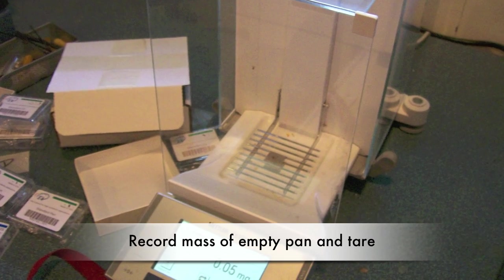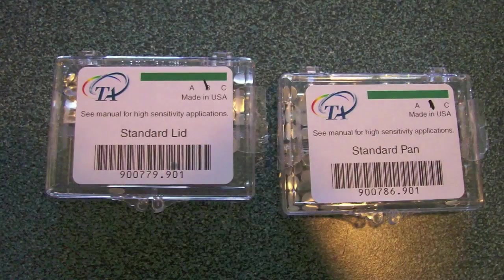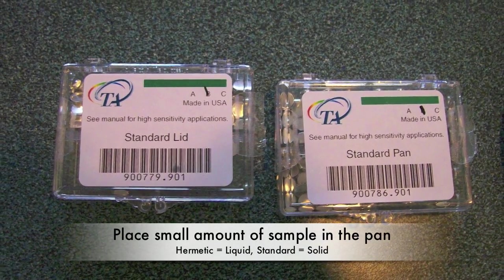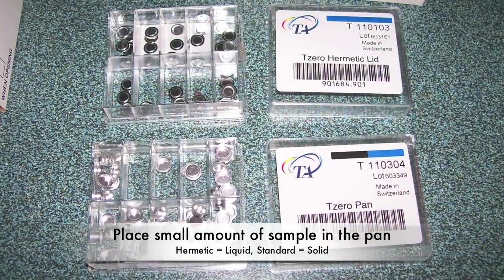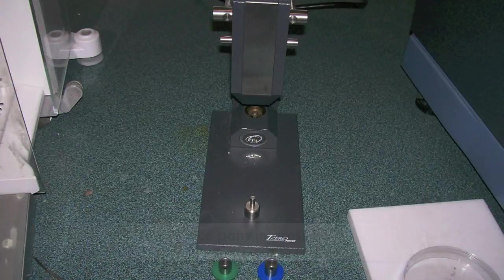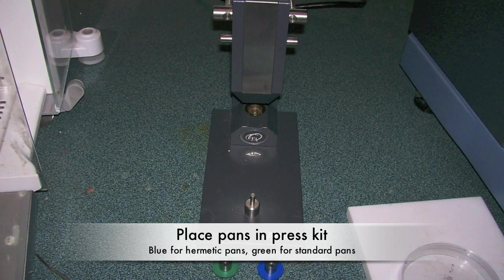To prepare your sample, record the empty pan and lid mass and tare the scale. For a solid sample, cut the sample and place it in the standard pan. For a liquid sample, put one drop in the bottom of the hermetic pan. Place the lid on top and put it in the proper holders.